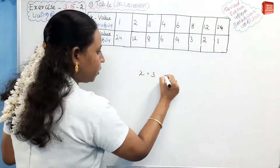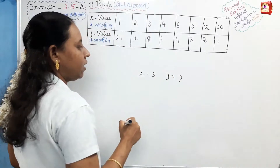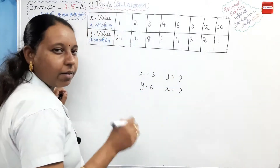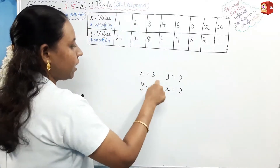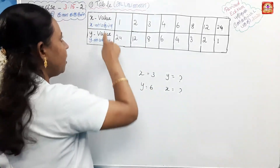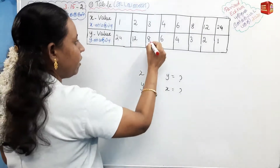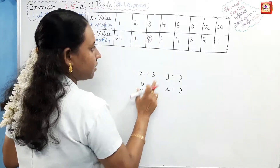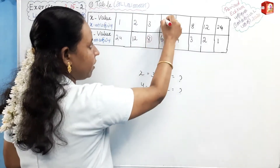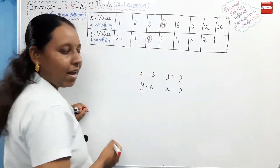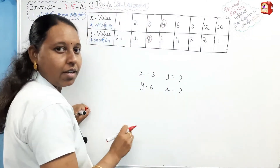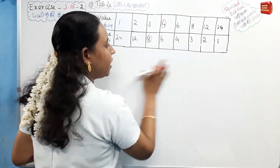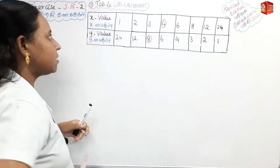What we need: when x equals 3, the y value is 8. When y equals 6, the x value is 4. So x equals 3 gives y equals 8 — that is one answer. Next, y equals 6 gives x equals 4. We plot these answers on the graph.